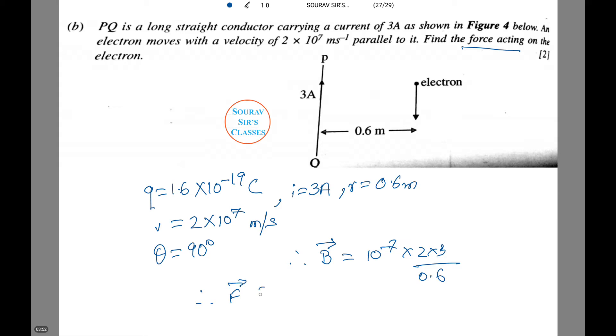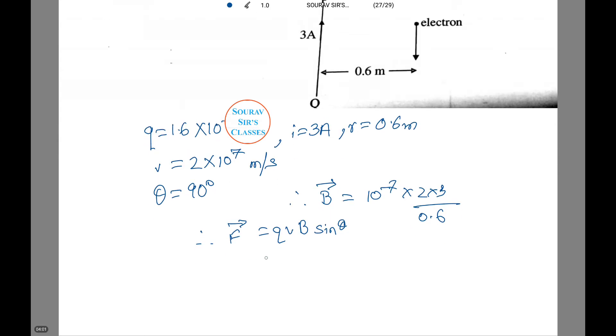Therefore B is equal to 10 to power minus 7 into 2 into 3 by 0.6. Therefore force on electron F is equal to Q V B sin theta. Therefore, putting in the values we have F equals to 1.6 into 10 to power minus 19 into 2 into 10 to power 7, canceling each other out, 6 into 0.6. And upon calculation we have F equals to 3.2 into 10 to power minus 18 Newtons.